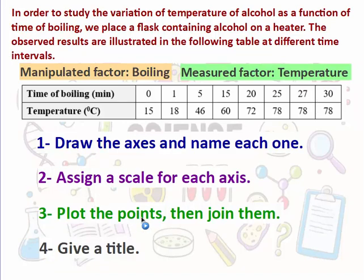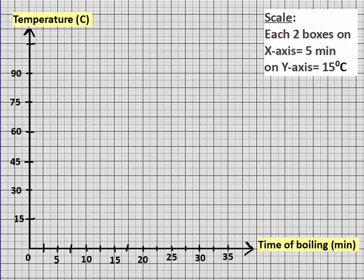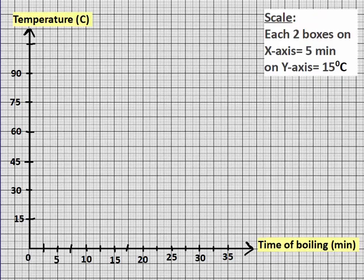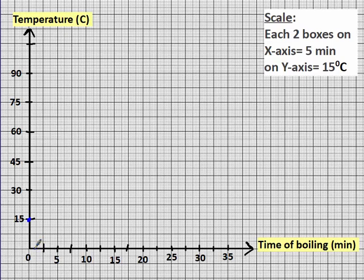Now we plot the points and join them in order from the first point to the last, using a ruler. We start with the first point: at zero minutes of boiling the temperature was 15°C, so we put the point at the origin area. The next point is at one minute, temperature 18°C — we find one minute on the x-axis and 18°C on the y-axis and place the point.